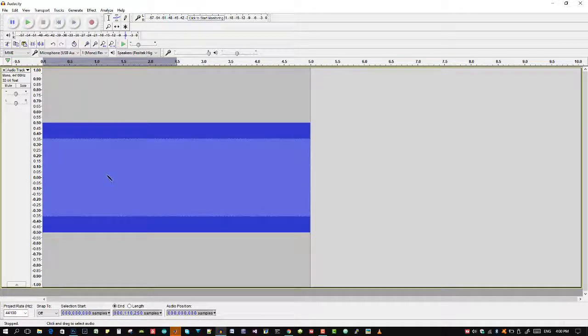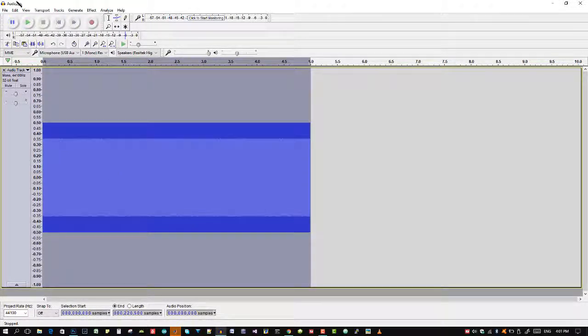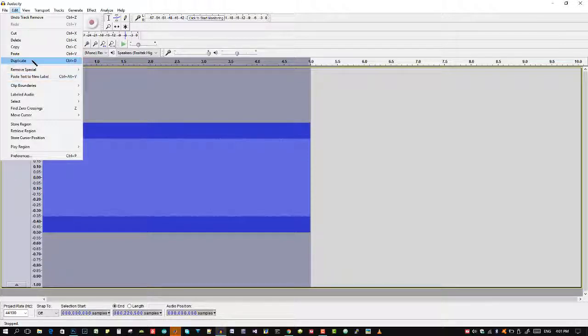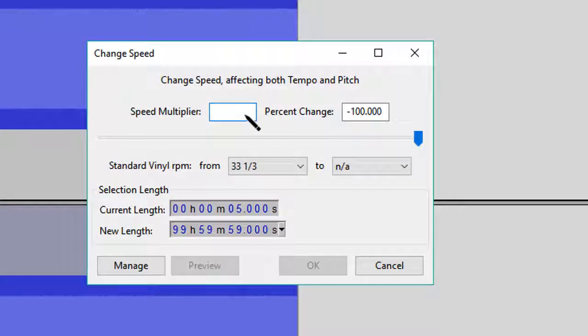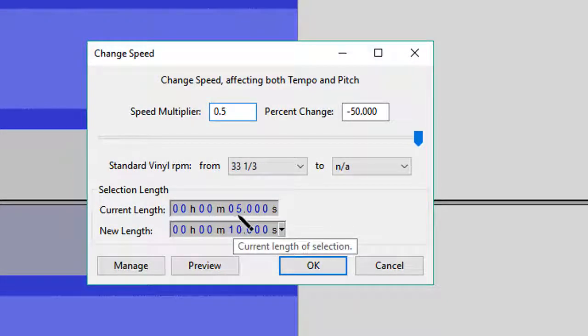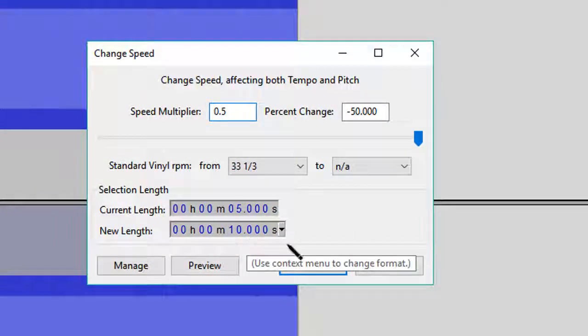Let's delete this track here. We will take our original track. We will duplicate it again. We will go to effect change speed. Instead of 2, let's put 0.5 here. You can see the current length is 5 seconds and after it will be 10 seconds. Click OK.